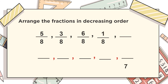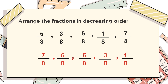Now let's see an example of decreasing order. We have a set of fractions where the denominators are all equal. Decreasing order means arranging from the largest to the smallest. The first fraction is 7/8, then 6/8, then 5/8, then 3/8, and the smallest is 1/8. From this example we have arranged the fractions in decreasing order from largest to smallest.